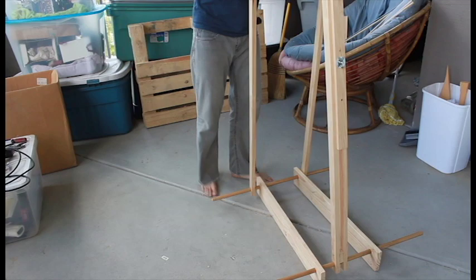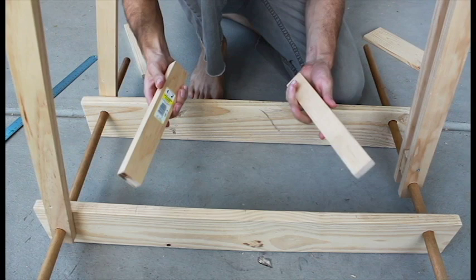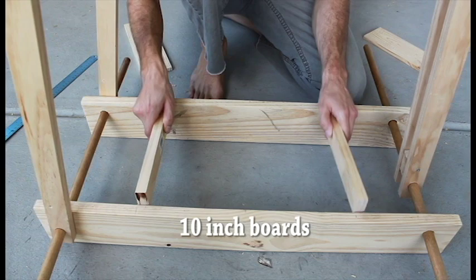I used the last of my pine boards to cut out these two 10-inch supporting boards for the bottom of the easel. I'm going to put them in there just like that and then on top of them I'm going to put these bits of pallet wood that I sanded.